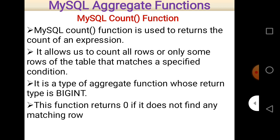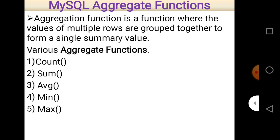Whatever condition is specified in a query, COUNT actually counts all those rows or records in the table. It is a type of aggregate function — a function where the value of multiple rows are grouped together. It may be asked in an examination: what do you mean by aggregate function and what are the different types? Aggregate functions group values of multiple rows to form a single summary value. The various aggregate functions are COUNT, SUM, AVG, MIN, and MAX.